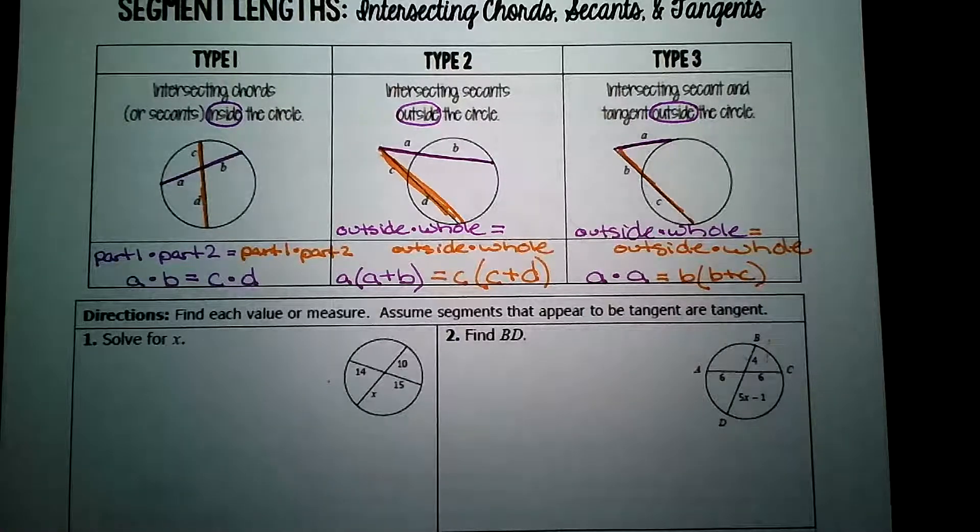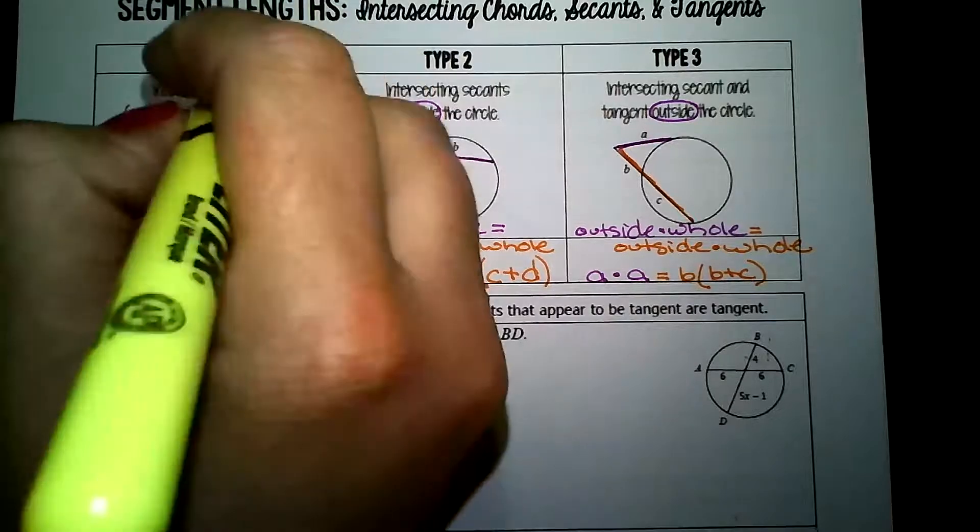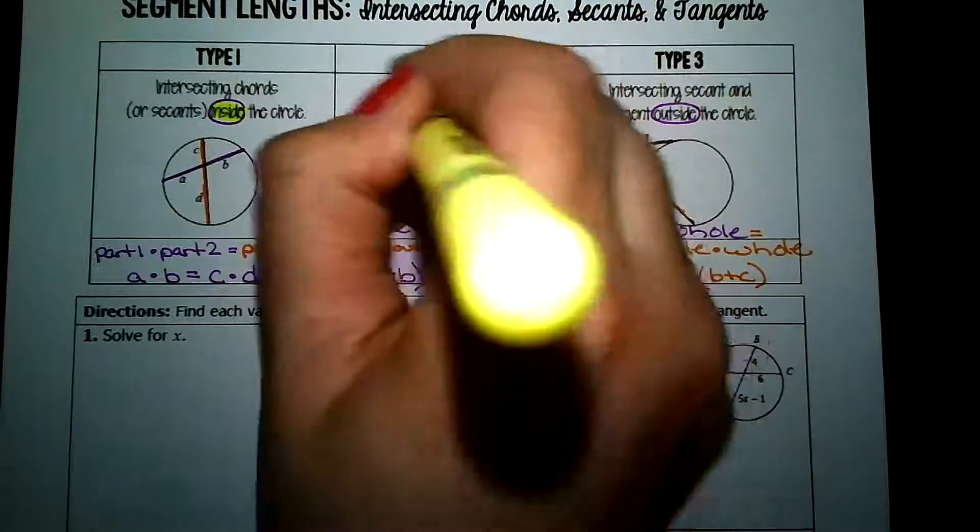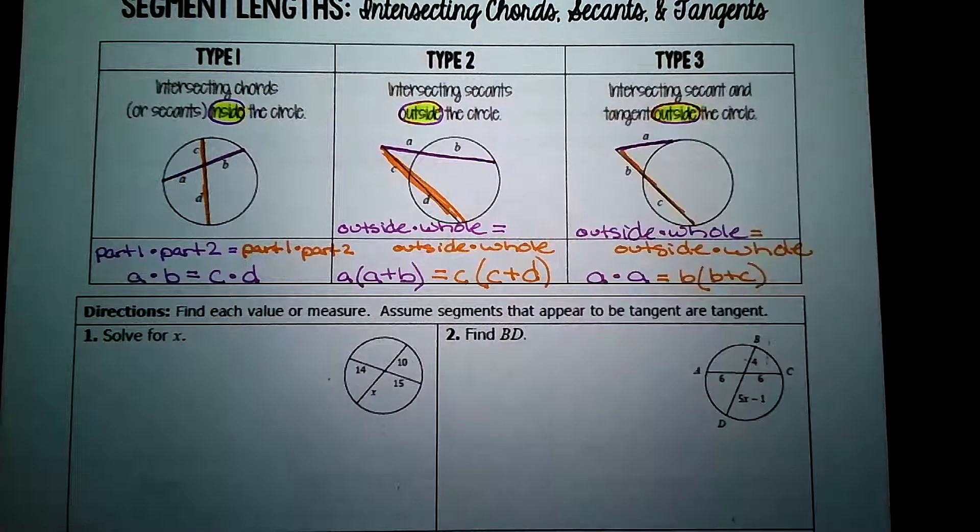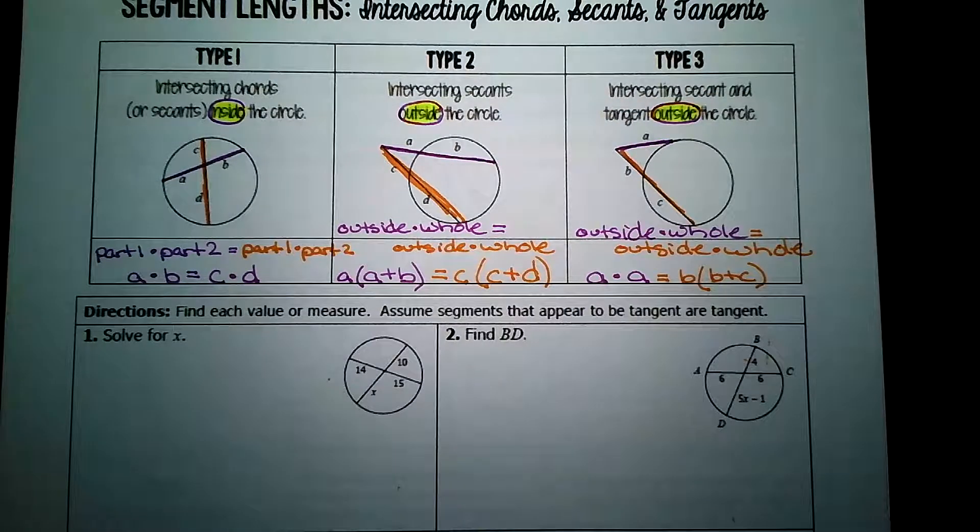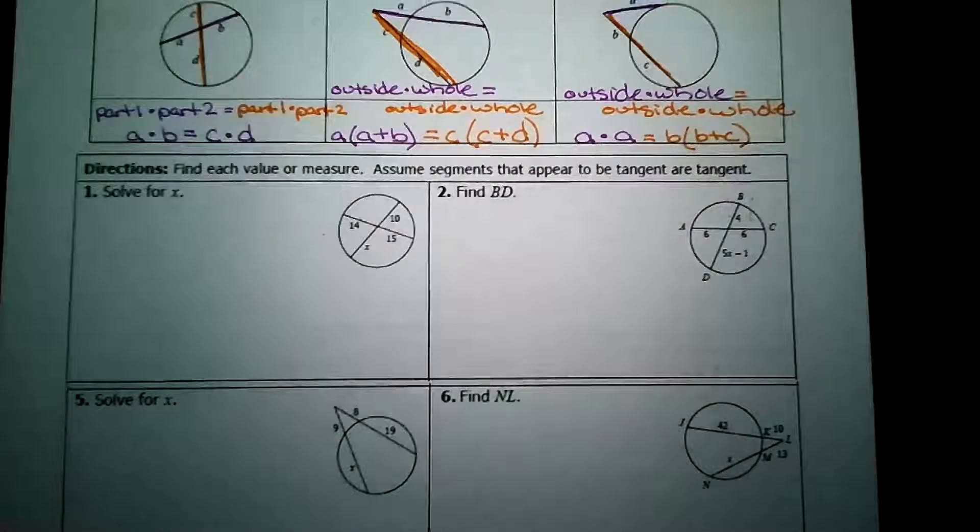All right, so inside intersections, part times part. Outside intersections, outside times whole. Let's do a couple of examples here. I've got several to look at.